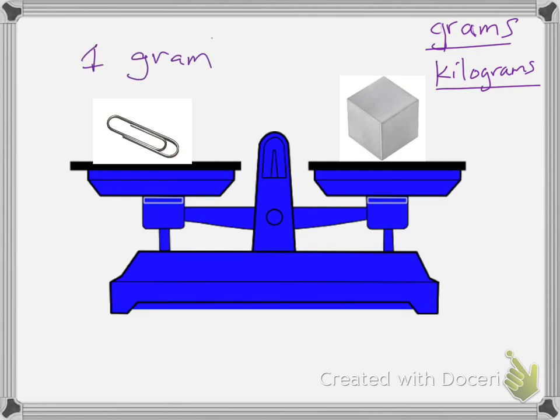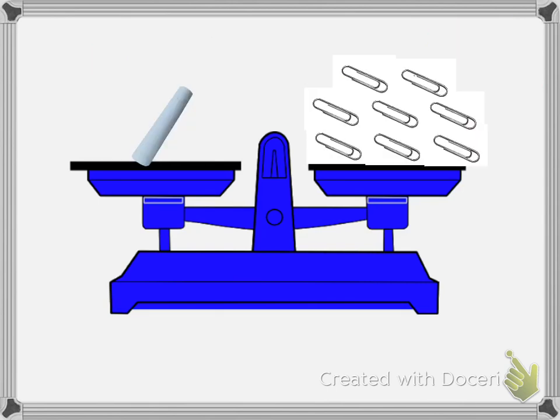I can use paper clips to see how much other objects weigh. Here I have a piece of chalk and I have paper clips. One piece of chalk equals eight paper clips, so a piece of chalk weighs eight grams.